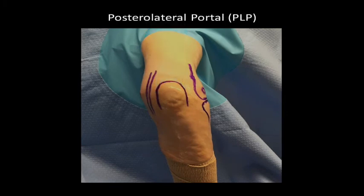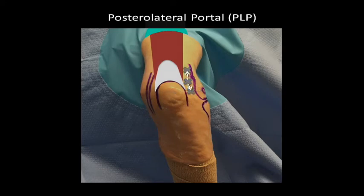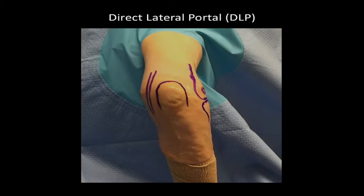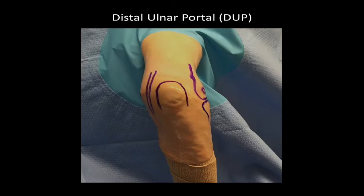The posterior lateral portal is located one centimeter proximal to the midpoint of a line that connects the olecranon and lateral epicondyle. It's typically located just lateral to the triceps tendon and can be moved proximally or distally as needed without significant risk. The direct lateral portal has also been described as the mid-lateral, soft spot, or direct posterior lateral portal. It's located in the center of a triangle that connects the olecranon, lateral epicondyle, and radial head. Finally, the distal ulnar portal is located three to four centimeters distal to the radiocapitellar joint along the lateral border of the ulna.